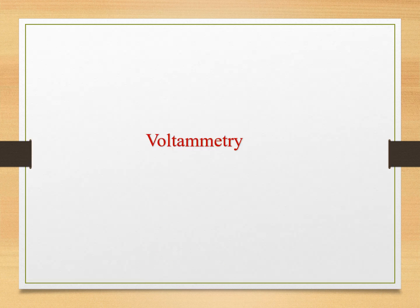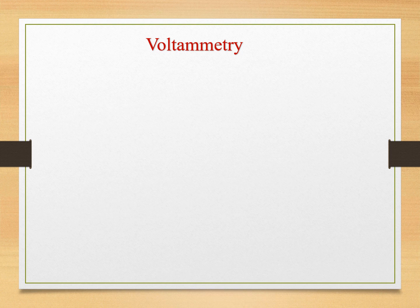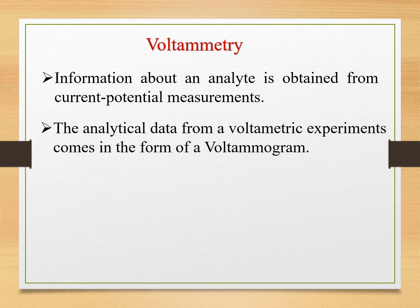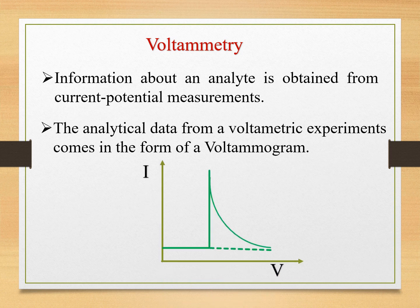Coming to voltammetry, we get information about the analyte from current-potential measurements. The analytical data from a voltammetric experiment comes in the form of a voltammogram, which plots the current produced by the analyte versus the potential of the working electrode. As the voltage changes, the current flowing through the cell is measured and this current is directly related to the reaction occurring at the working electrode.